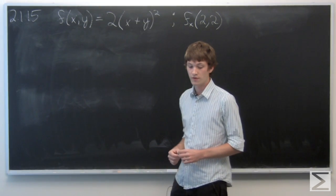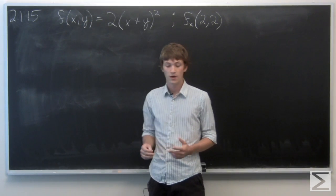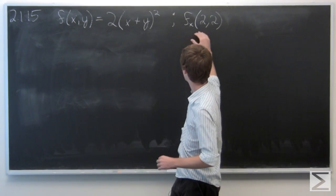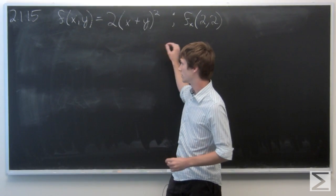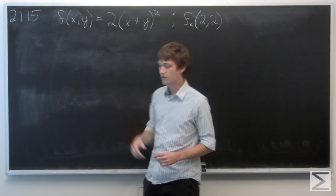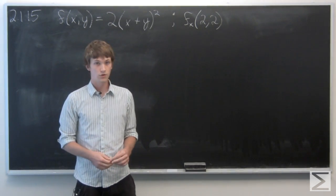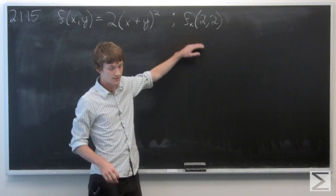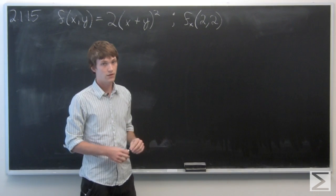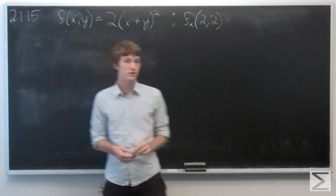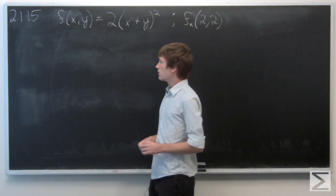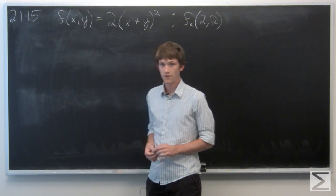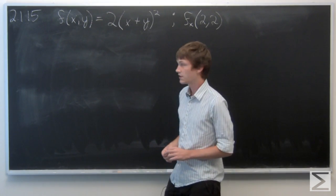In this problem, we're asked to find the partial derivative of the given function at the point. So we're going to take the partial derivative of f with respect to x and calculate the value at the point. First, we're going to need to find the partial derivative of f with respect to x.